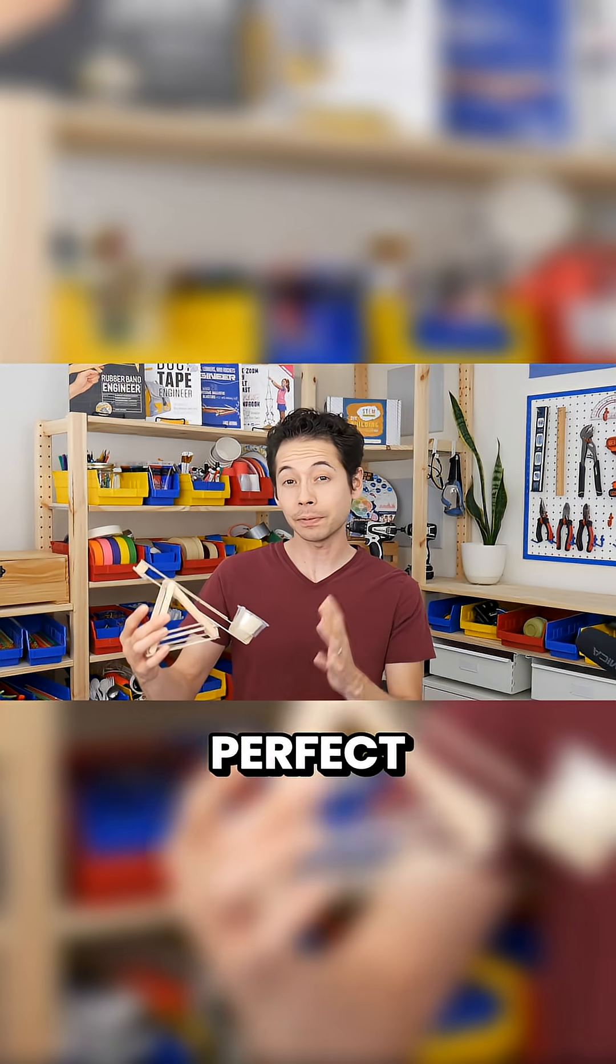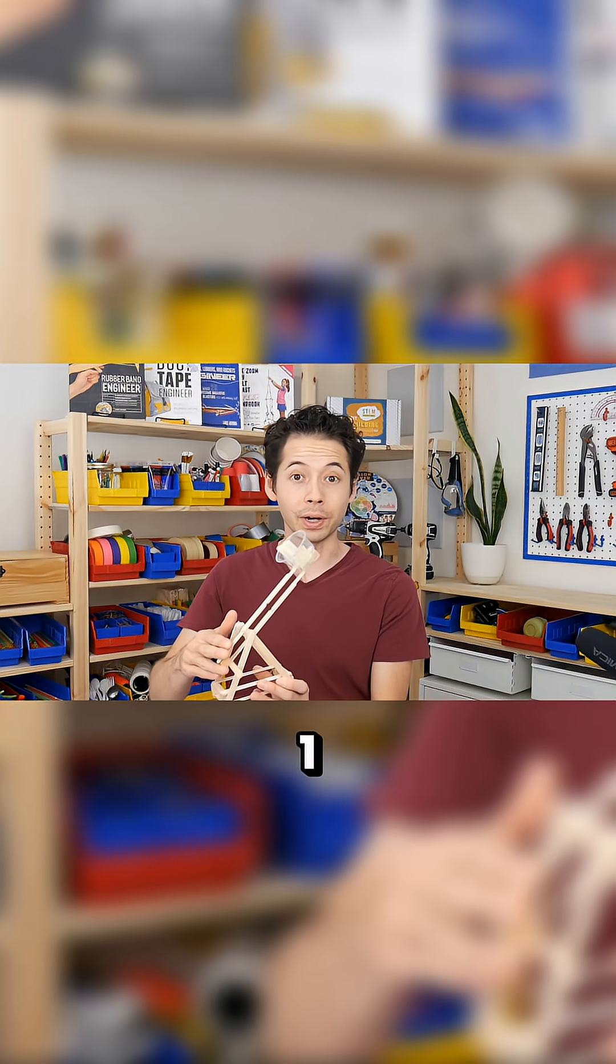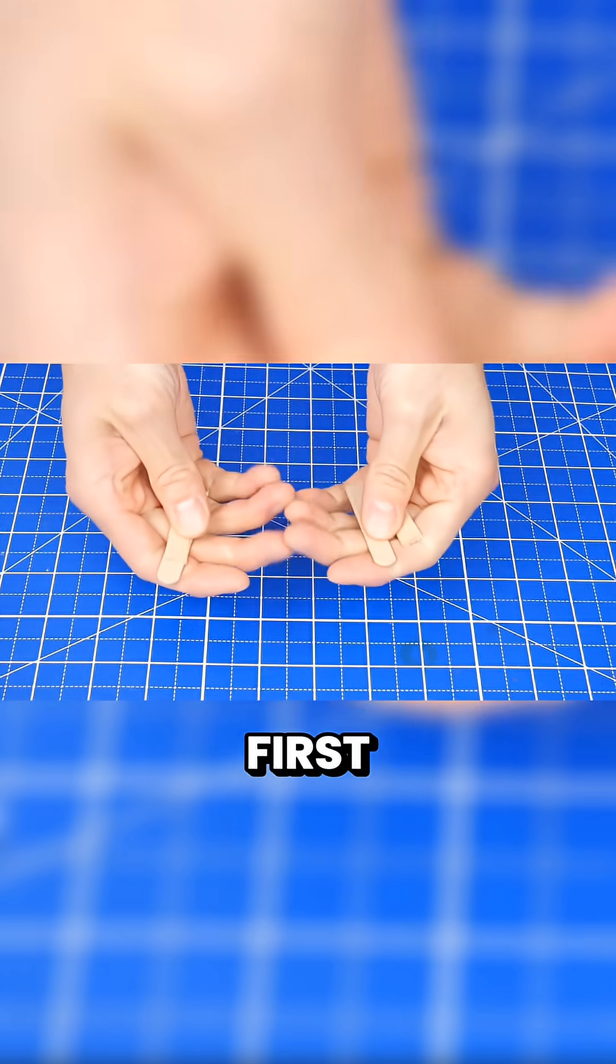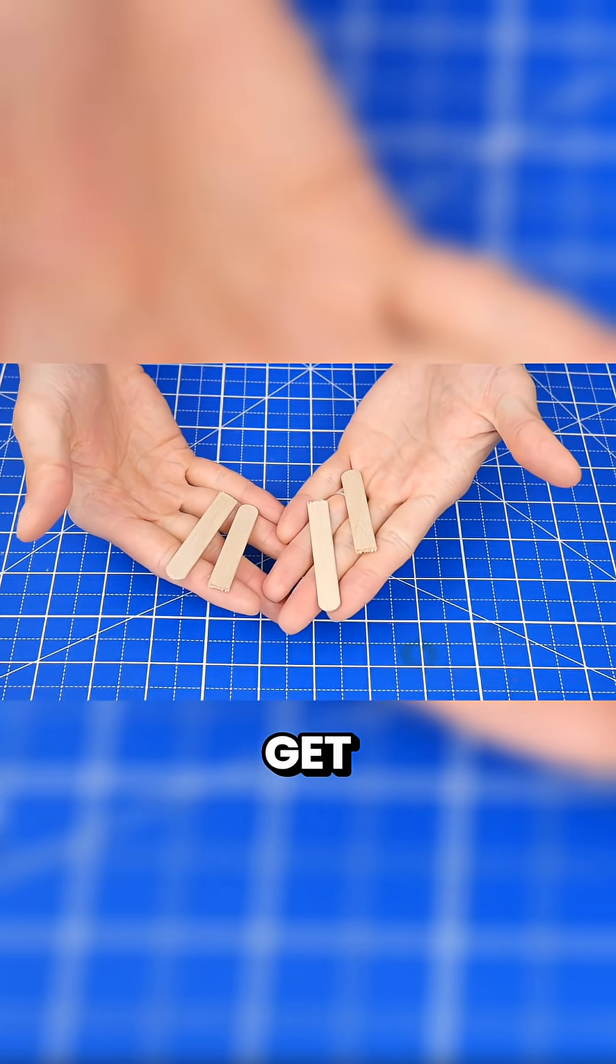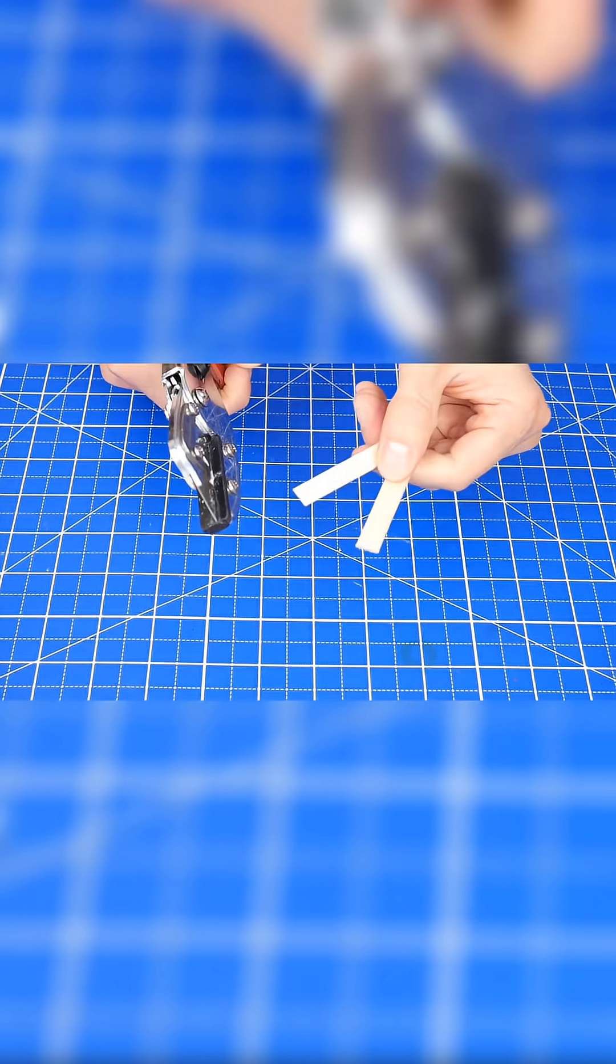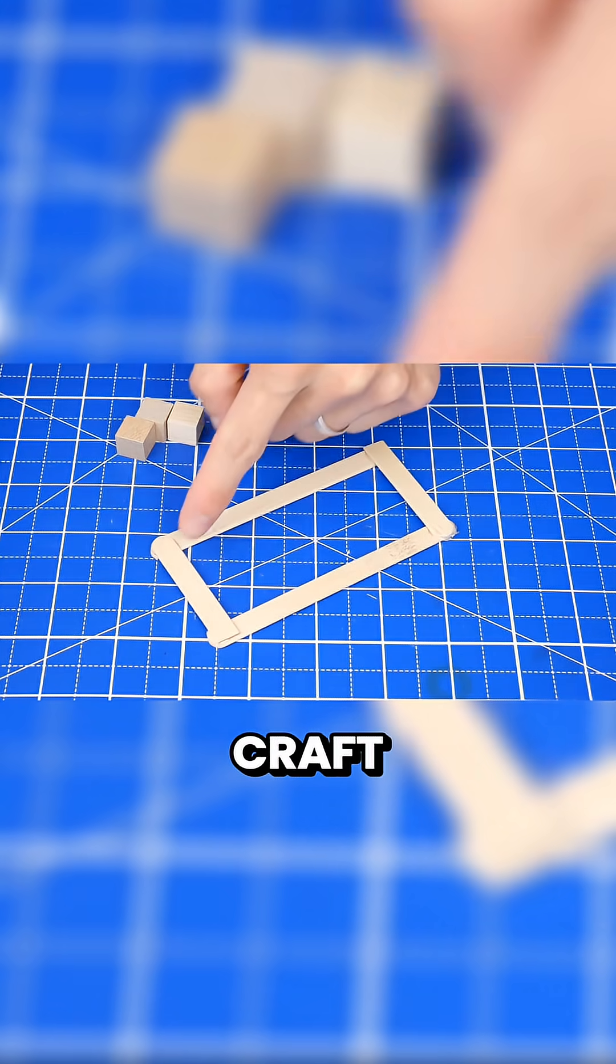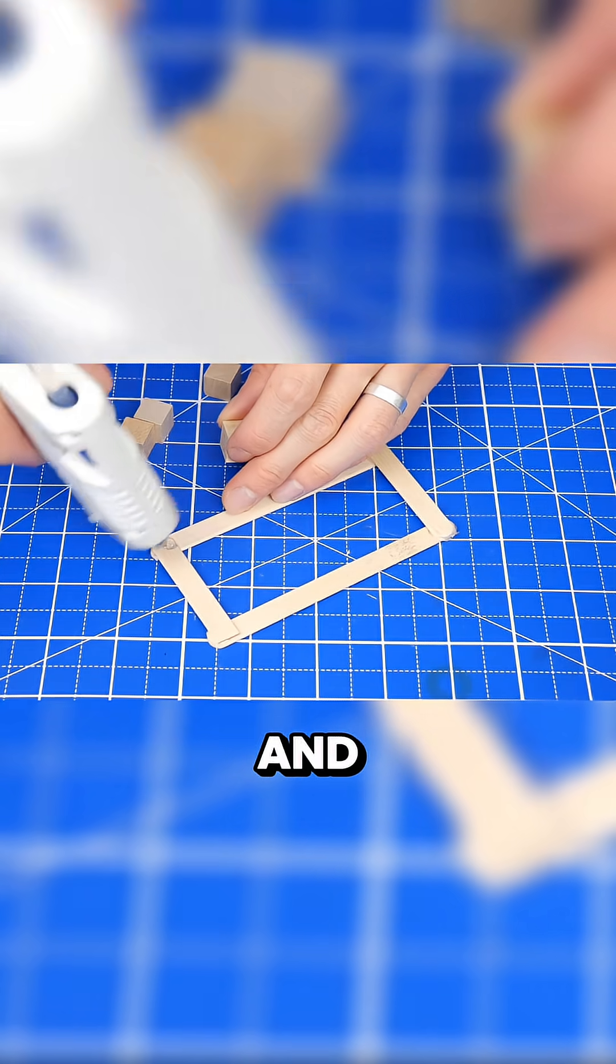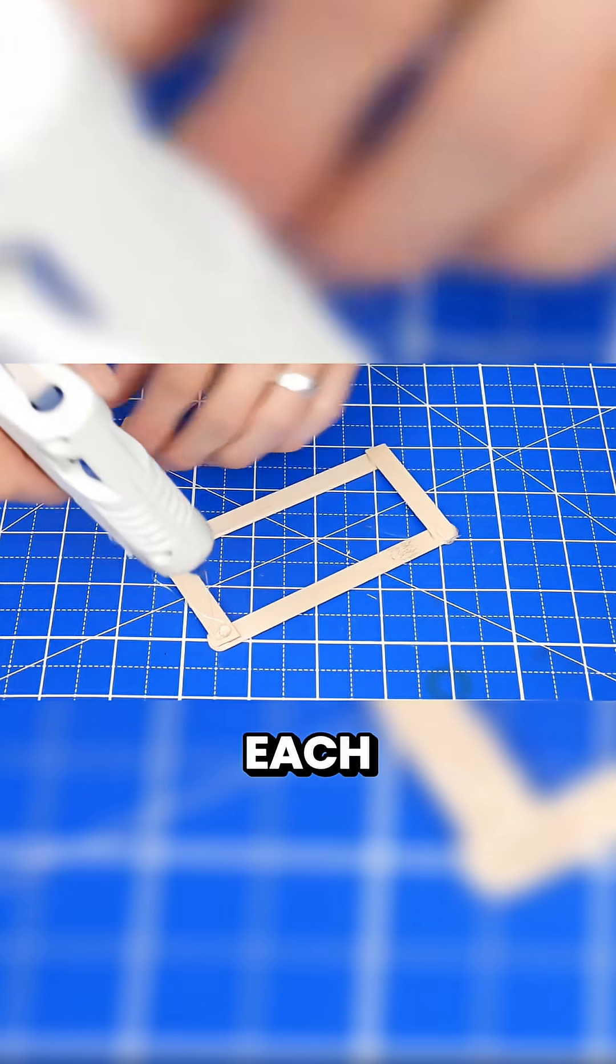This catapult project is a perfect example of what a class 1 lever is. First, you'll need to cut two craft sticks in half to get four half pieces. Next, start the base of the catapult by gluing craft sticks into a rectangle like this, then gluing cubes onto each corner.